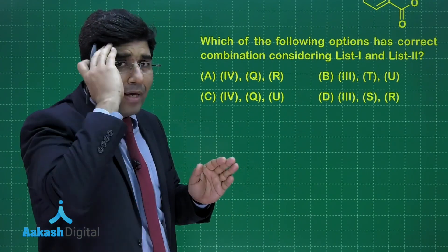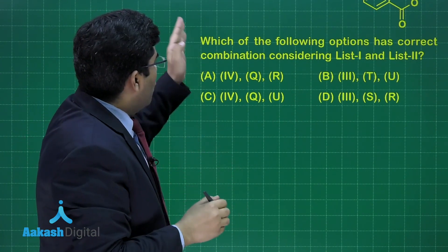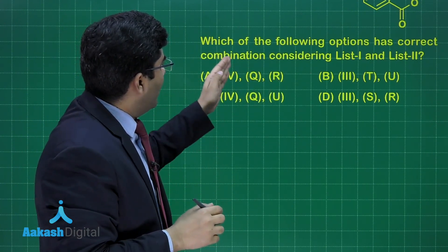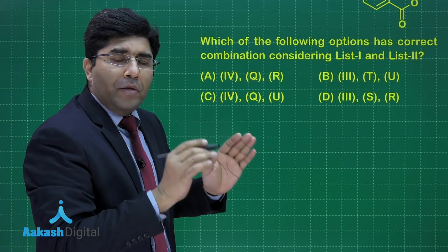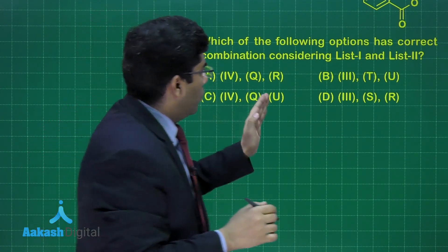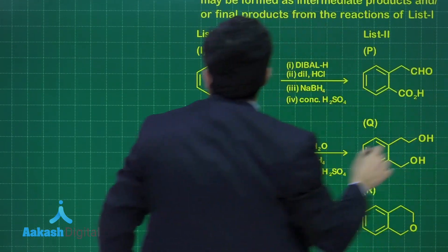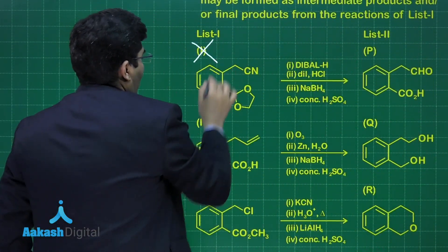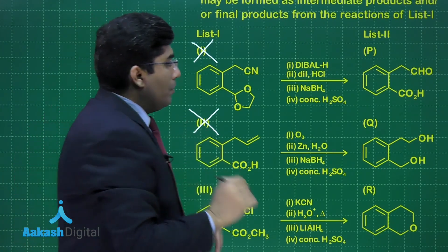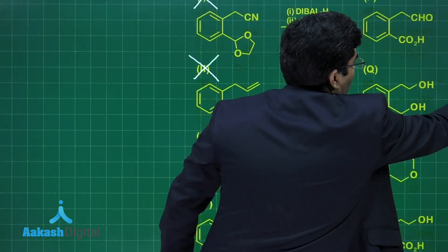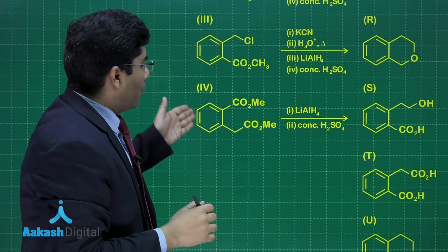We have to apply common sense. He is asking which of the following options has the correct combination considering List-I and List-II. The reaction number one and two cannot be the answer. It means we have to choose from the third equation and the fourth equation.